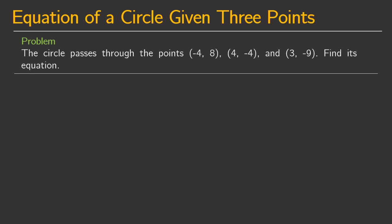So if we have this kind of problem, what we are going to do is to consider the general equation of the circle. We know that the general form of the circle's equation is x squared plus y squared plus dx plus ey plus f equals 0. This means that all three points satisfy this given equation.